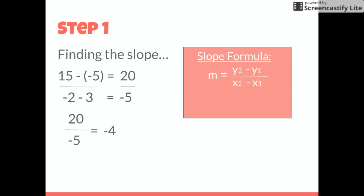After doing 15 minus negative 5, you'll get 20 as the numerator. Then when you solve negative 2 minus 3, you'll get negative 5 as the denominator. Finally, you should simplify the fraction 20 over negative 5 to negative 4. So now the slope is negative 4.